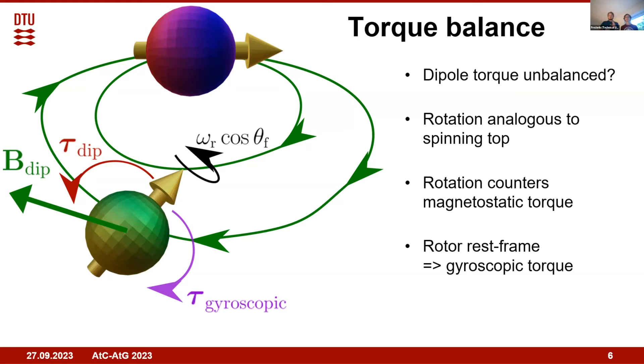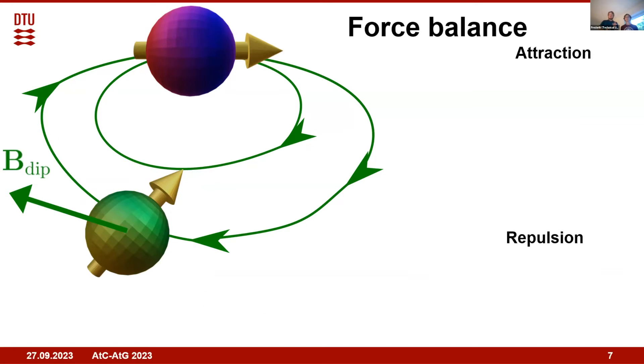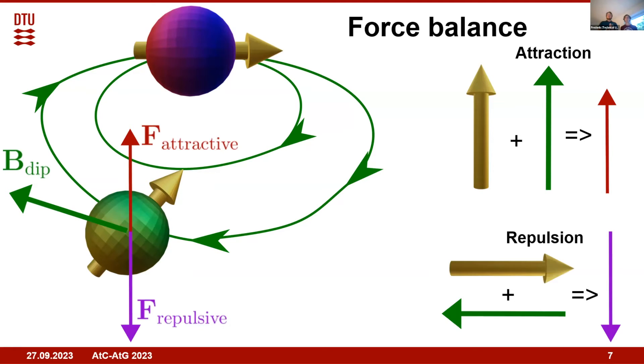To explain the levitation itself, we need an attractive force and a repulsive force. The attraction comes from the vertical components of the dipole field and the floater moment, while the repulsion comes from the horizontal component because the horizontal components are anti-parallel and so lead to repulsion instead of attraction. There also is the effect of gravity, but this is a small and unnecessary correction. The phenomenon is fundamentally magnetic.